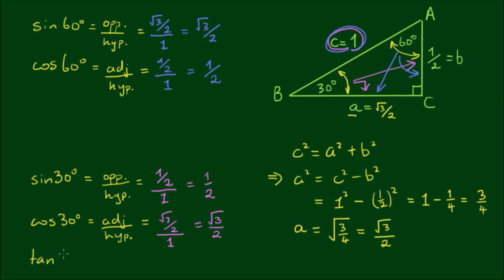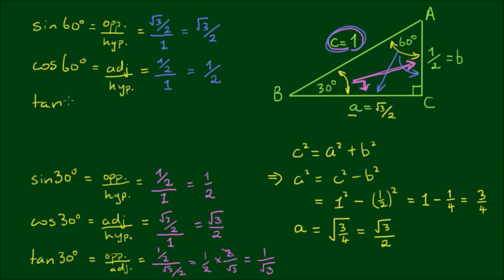Now, what about the tan of these angles? Tan of 30 degrees — tan of angle B — is always the ratio of the opposite side to the adjacent side. The opposite side is one half, divided by the adjacent side of root 3 over 2. This equals one half times 2 over root 3. The 2's cancel, so we get 1 divided by root 3. The tan of 60 degrees — tan of angle A — has the opposite side equal to root 3 over 2, and the adjacent side equal to one half. So we have root 3 over 2 times 2 over 1; the 2's cancel, and the result is the square root of 3.